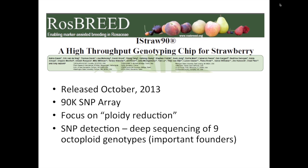The Rosebreed Project, which I mentioned before, has one of its very important goals the development of high-throughput genotyping platforms, which were also developed for crops like apple, peach, and cherry. And we also developed one—Niall Basile primarily and her group developed a 90K SNP chip via Affymetrix, and it was released in October of last year.